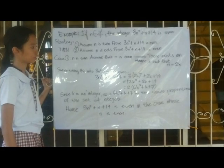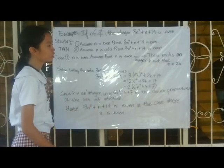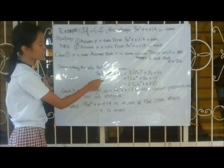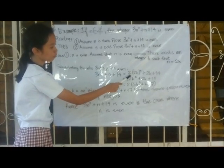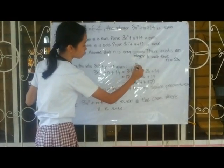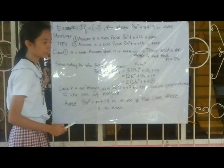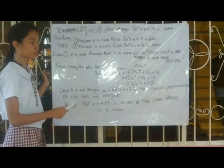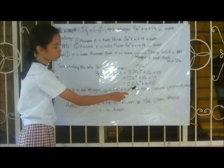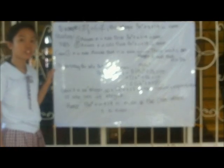Case 1: n is even. Assume n is even. Then there exists an integer k such that n equals 2k. Substituting 2k into the equation gives 3(2k)² plus 2k plus 14. Since (2k)² equals 4k², this becomes 3 times 4k² plus 2k plus 14, which equals 12k² plus 2k plus 14. Factoring out 2 gives 2(6k² plus k plus 7). Since k is an integer, so is 6k² plus k plus 7, so 3n² plus n plus 14 is even when n is even.